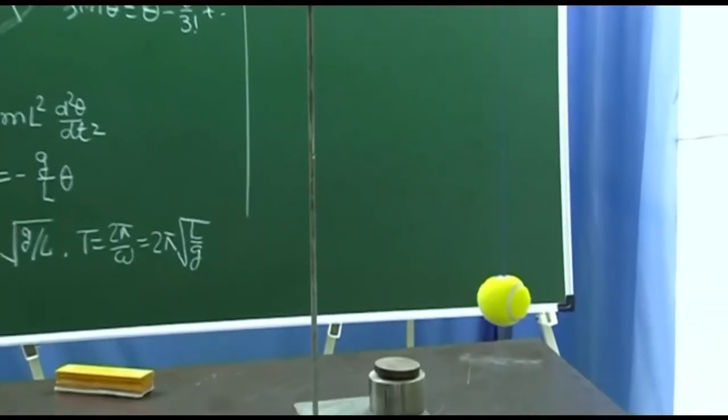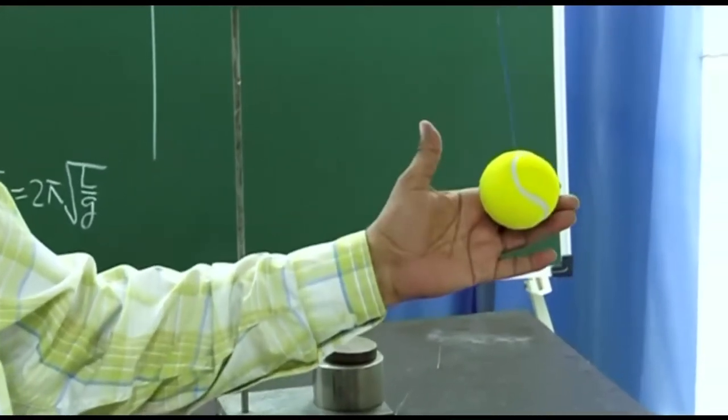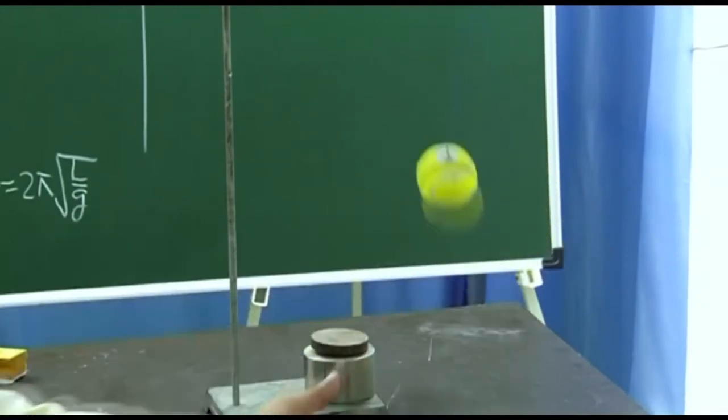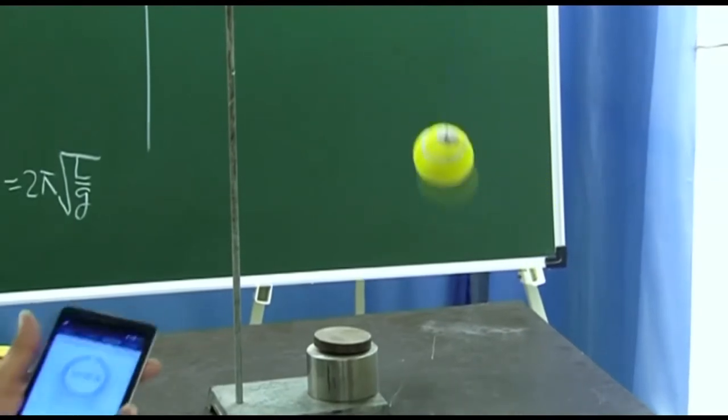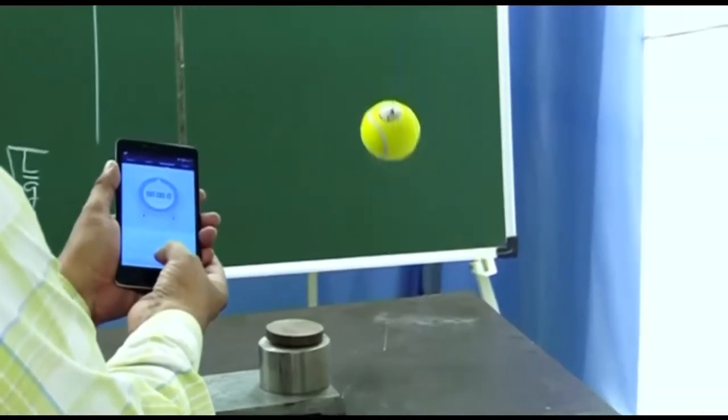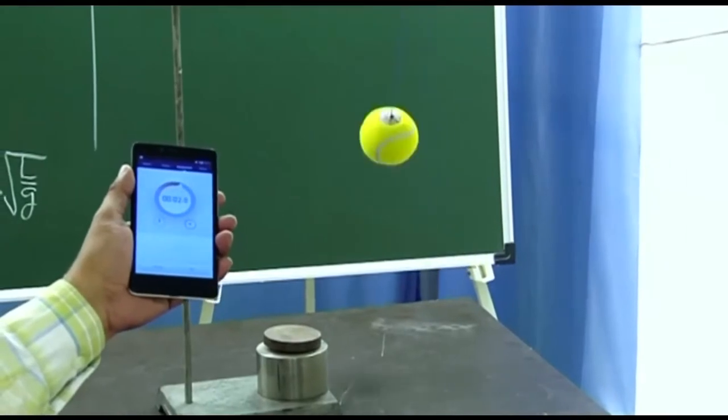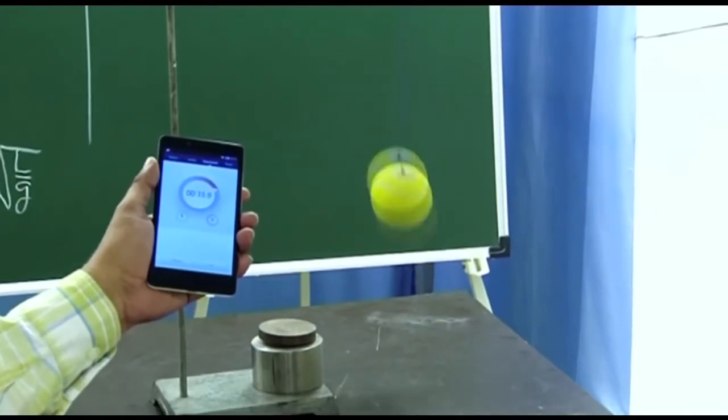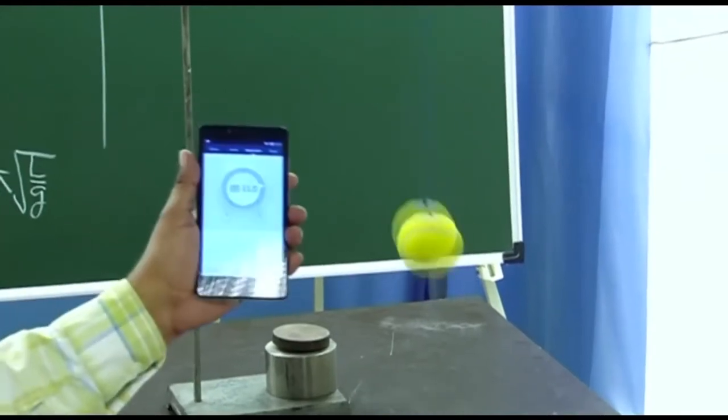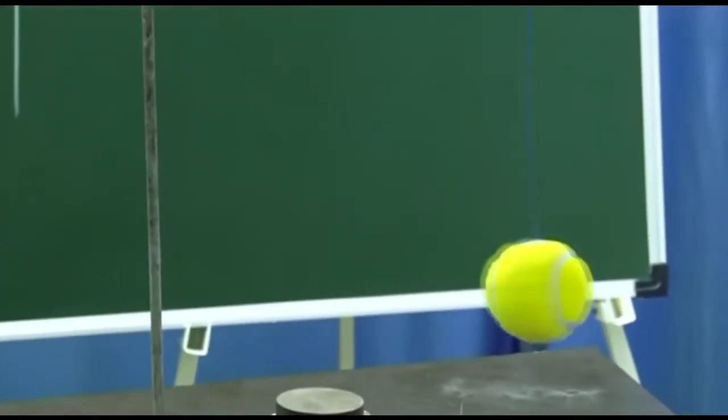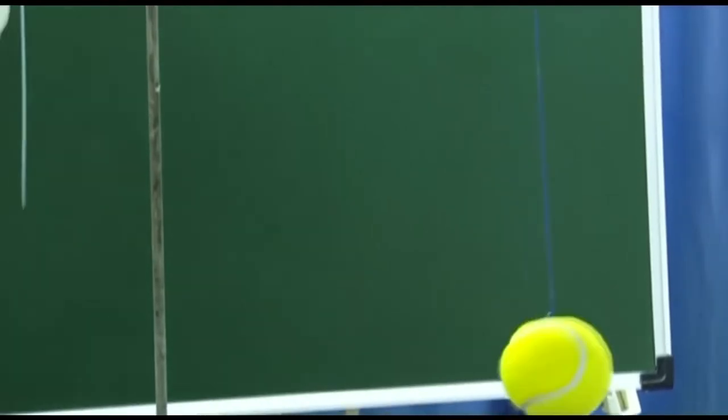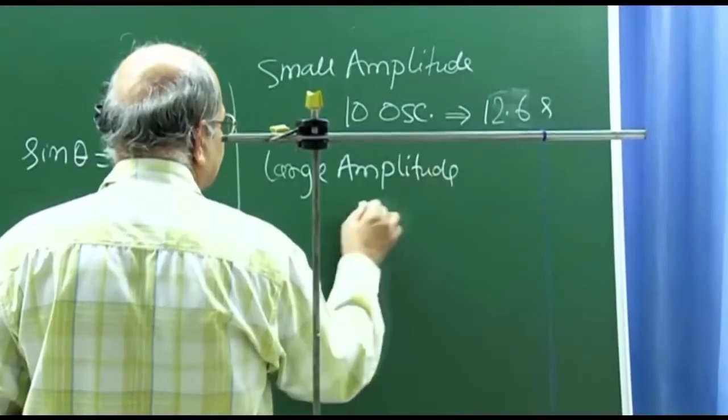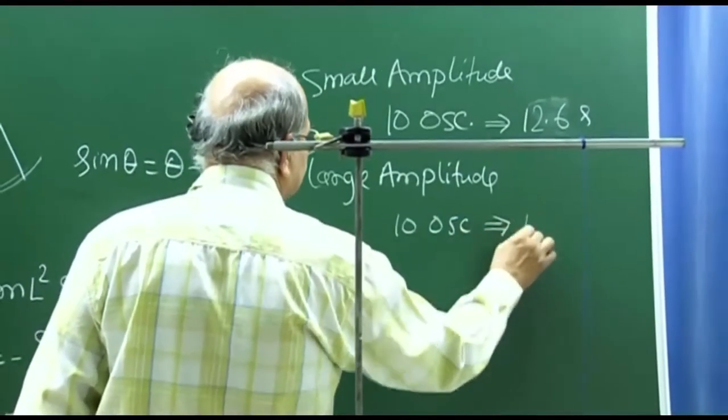Now let me oscillate it with a large amplitude. So I am pulling it to a large angle. This angle, although I am not measuring, but must be more than 45 degrees, and I will leave it from here. Once again, here it goes. 1, 2, 3, 4, 5, 6, 7, 8, 9, 10. Large amplitude, 10 oscillations, 13.0 seconds.